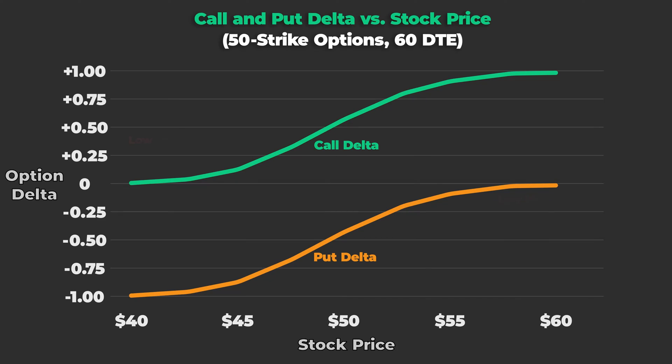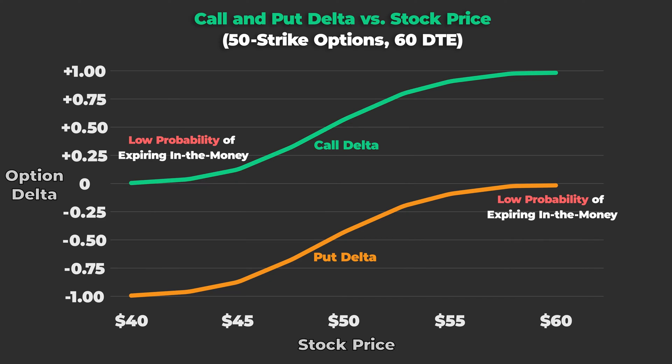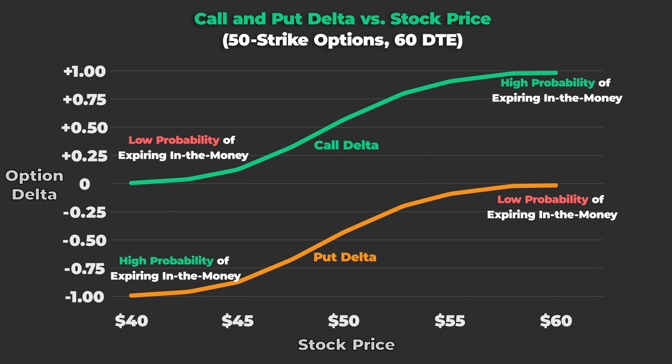We can understand Delta as the probability of an option becoming shares or expiring in the money. If an option has a low Delta, close to zero, it has a small probability of becoming shares and will behave less like them. Conversely, if an option has a high Delta — close to positive or negative 1 — it has a high probability of becoming shares at expiration, trading much more like shares of stock and experiencing a $1 change in the option price for a $1 change in the stock price.